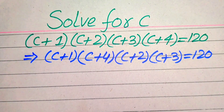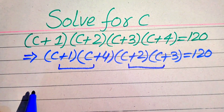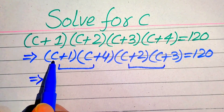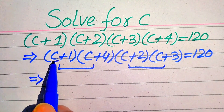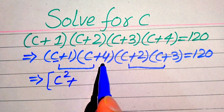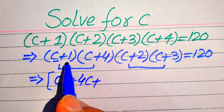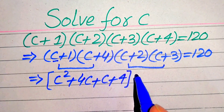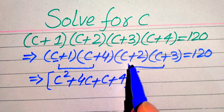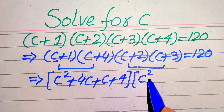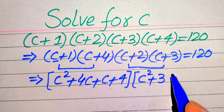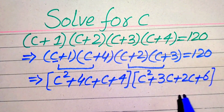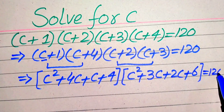In the next step we multiply these two pairs of factors term by term. For (C+1)(C+4): C×C = C², C×4 = 4C, 1×C = C, 1×4 = 4. For (C+2)(C+3): C×C = C², C×3 = 3C, 2×C = 2C, 2×3 = 6. This whole equation equals 120.